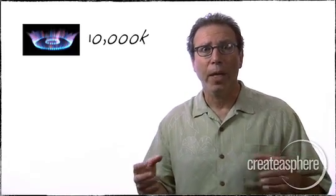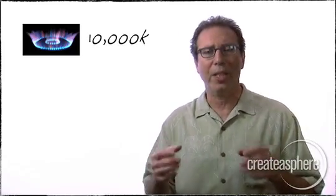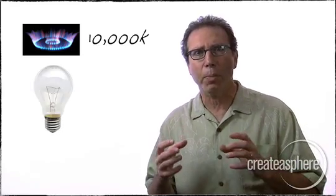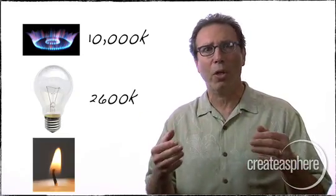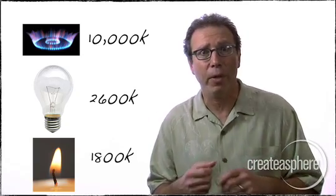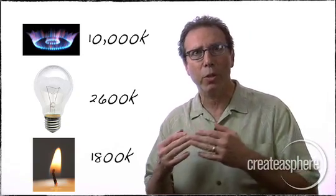If it's bluer or cooler looking than daylight, it's higher degrees Kelvin. So a bluish twilight might be 10,000 Kelvin. If it's redder or warmer than tungsten, it's lower degrees Kelvin. So a household incandescent bulb might be 2600 or 2800 Kelvin, and a flame might be as low as 1800 degrees Kelvin, much warmer than the light fixtures we shoot with.